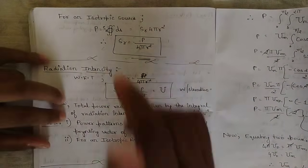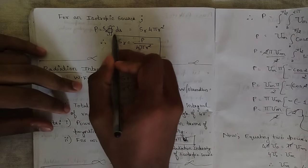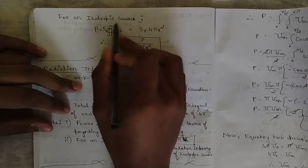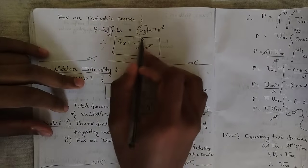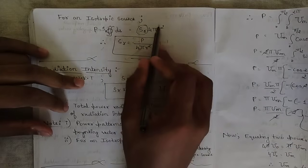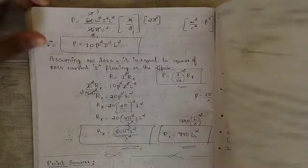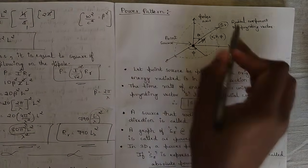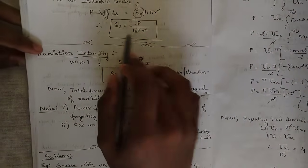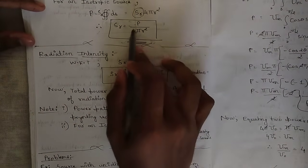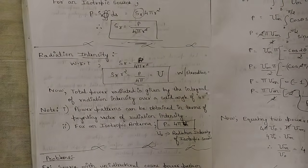For an isotropic source, since S_r is constant, it can be taken outside the surface integral: P = S_r · ∮ dS = S_r · 4πr². Therefore, S_r = P / (4πr²). The term 4πr² appears because we are taking the surface area of the sphere — consistent with the conclusion from the power pattern that in 3D the pattern is a sphere. So the radial component of the Poynting vector equals the total power divided by 4πr².